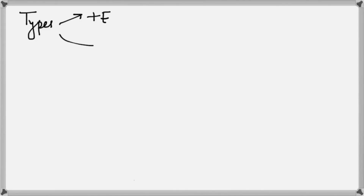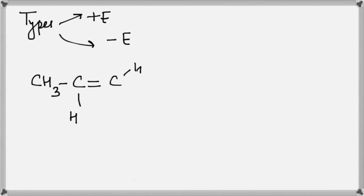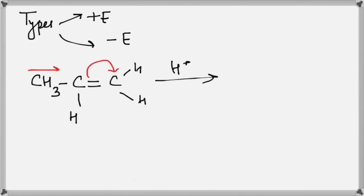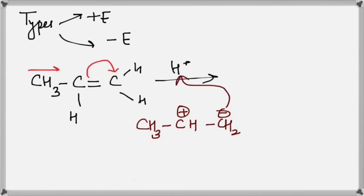There are two types of electromeric effects — we call them +E and −E. To differentiate: we have CH₃-C=CH-H₂ and we bring H⁺. The electrons shift from CH₃ to the right, the bond breaks, and what we get is CH₃-CH⁺ and CH₂⁻.